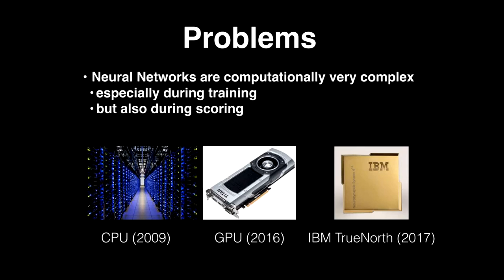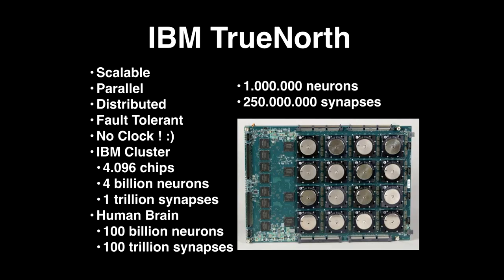There is a catch: neural networks are computationally intensive, especially during training and scoring. In 2009, Google Brain used 16,000 CPU cores. By 2016, you can get that same computing power in a single NVIDIA Titan M60 GPU card, which you can rent on the IBM Cloud for one dollar per hour. Next year, IBM will introduce a new ASIC called IBM TrueNorth, running neural networks on-chip consuming only four watts. We're building a cluster with 4,000 of those chips — four billion neurons and one trillion synapses — compared to the human brain's 100 billion neurons and 100 trillion synapses.